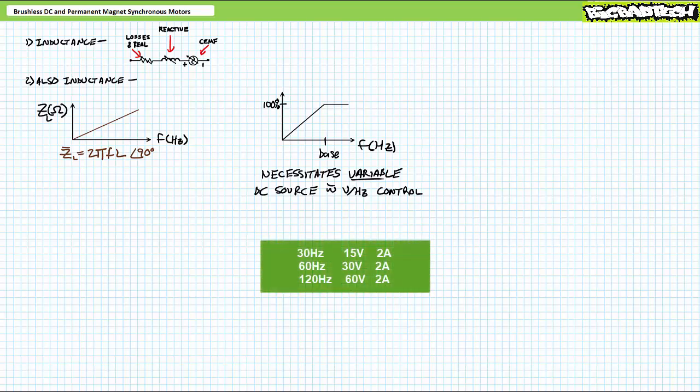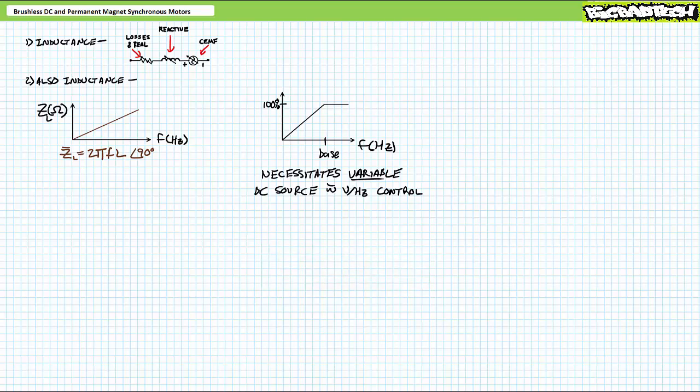For example, consider a brushless DC motor operating at a primary frequency of 30 hertz at 15 volts such that the stator windings draw 2 amps of current. At an increased excitation frequency of 60 hertz, the inductive impedance of the stator windings doubles such that at 30 volts the windings still draw only 2 amps of current. At an even higher excitation frequency of 120 hertz, the inductive impedance again doubles such that at 60 volts the stator windings still only draw 2 amps of current. Long story short, three-phase six-step 120-degree modulation can't use a fixed DC source if you want to keep current manageable, and must employ a variable voltage source using volts per hertz control.